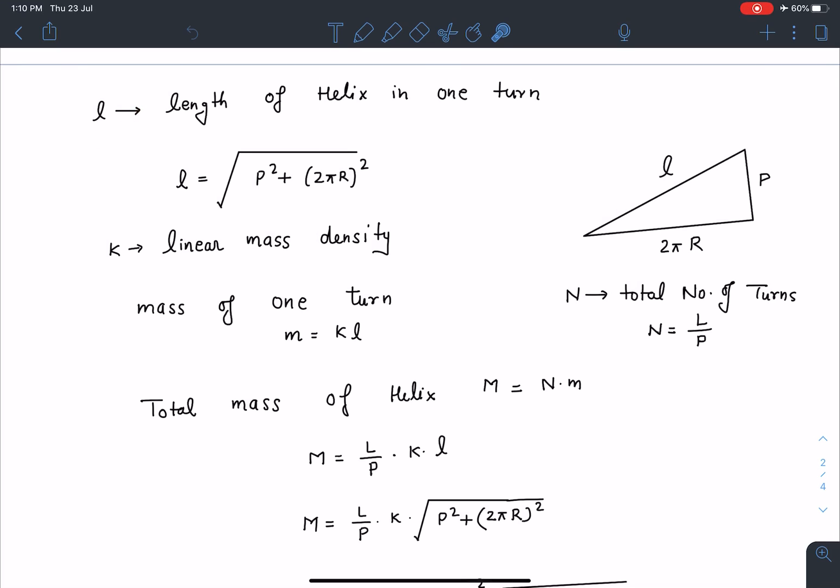I'm saying this l is the length of helix in one turn. So when you open this helix in a plane, then this slant height of the triangle is the length of the actual helix curve.